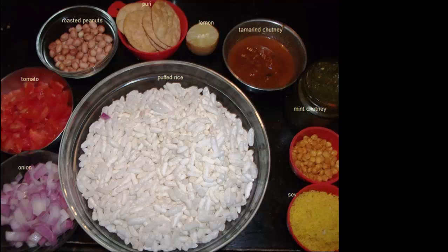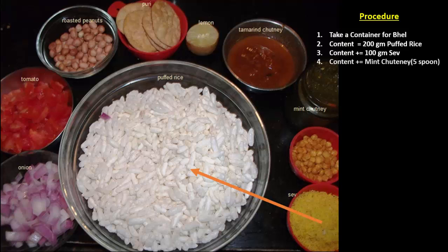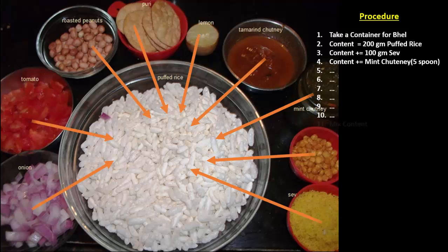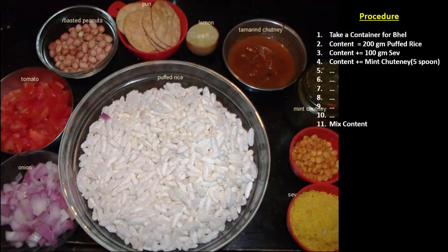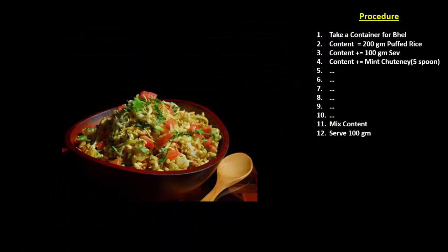We need some ingredients like onion, tomato, roasted groundnuts, lemon, tamarind chutney. Then take a container for bhel. Put 200 grams of puffed rice in the container. Add 100 grams of sev to it. Then add 5 tablespoons of mint chutney and so on. Finally, mix the content in the container. Then serve about 100 grams per plate. Very straightforward, isn't it?